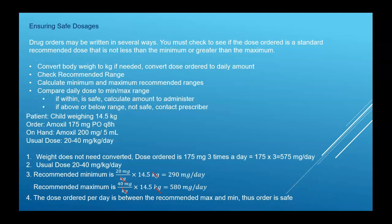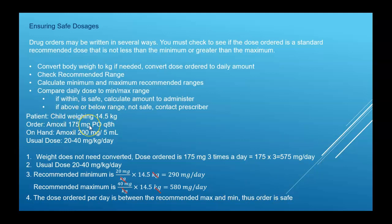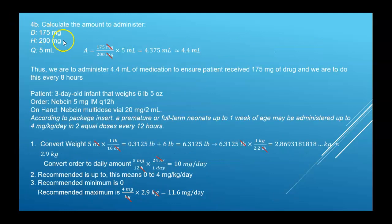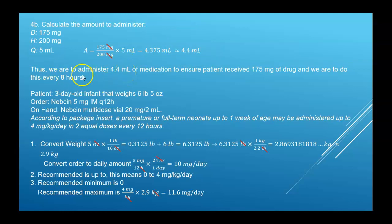Therefore we can go ahead and calculate the amount to administer. The amount to administer uses the single dose: D is 175 milligrams, H is 200 milligrams, Q is 5 milliliters. That gives 4.375, which rounds to 4.4 milliliters. So you're going to administer 4.4 milliliters every eight hours.